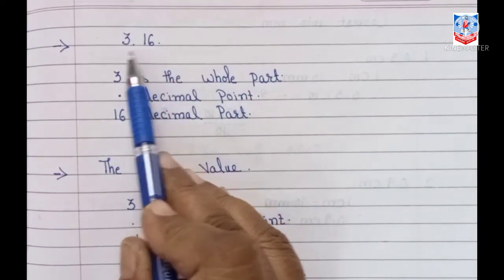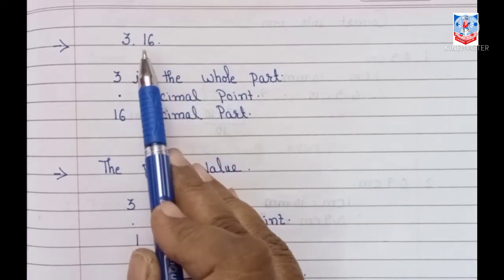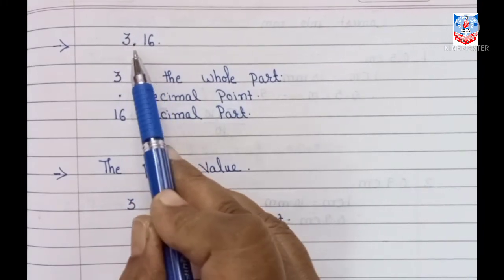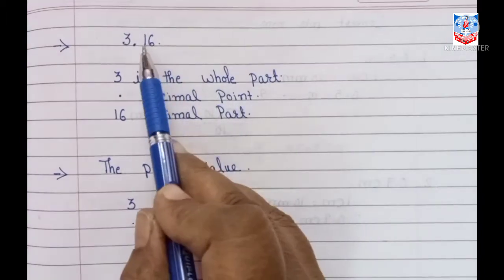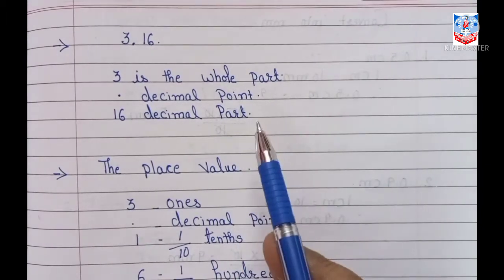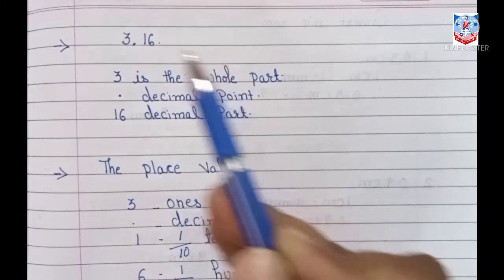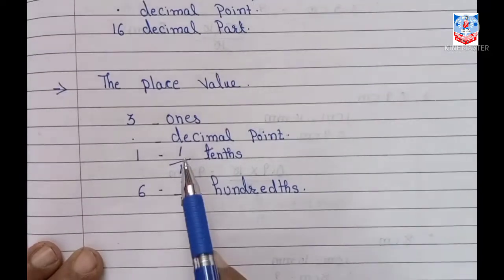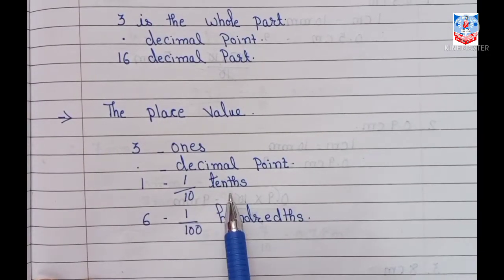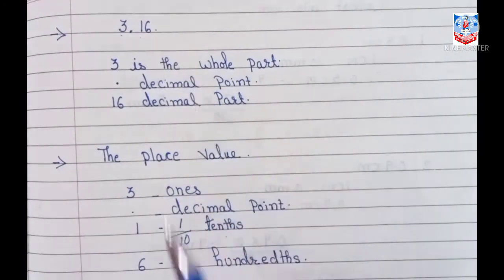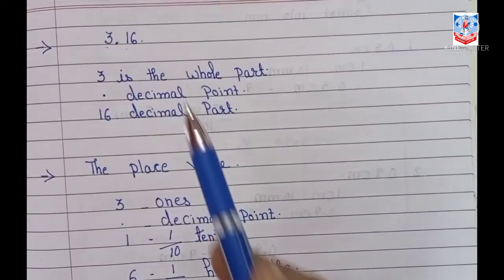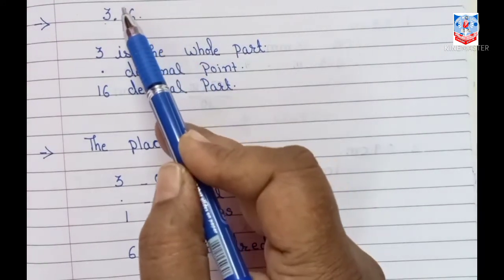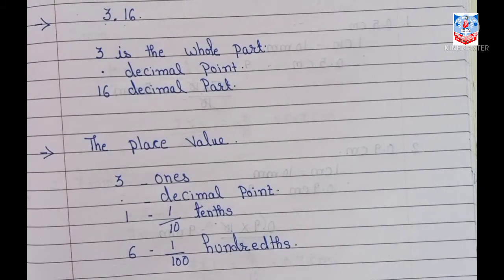Take the decimal number 3.16. A decimal number has two parts: the whole part and the decimal part. In 3.16, the 3 is the whole part, the dot is the decimal point, and 16 is the decimal part. Now let us see the place value. The 3 is in the ones place. After the decimal point, 1 is in the tenths place and 6 is in the hundredths place. If there were another digit, it would be in the thousandths place. In your book, you will learn up to only 2 digits — tenths and hundredths.